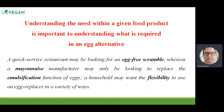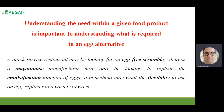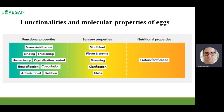They are quite unique, and understanding the need within a given product is important to understanding what is required in an egg alternative. Did we try to produce some imitation — an egg analog, egg-free egg analogs — or do we try to build some product using these functionalities that eggs can do? Functional properties, sensory properties, and nutritional properties — three types of different things in one egg.